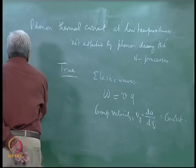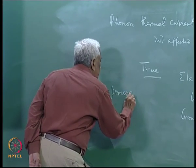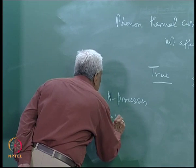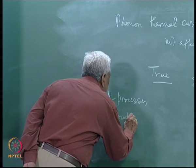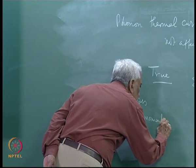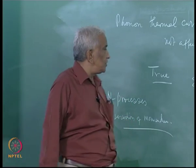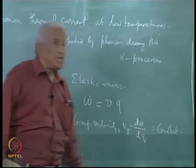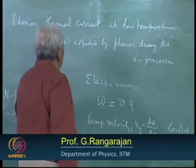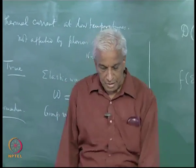N-processes are ones in which momentum is conserved. It is only the U-processes in which momentum is not conserved. When the momentum is conserved, that is consistent with the group velocity being constant. Therefore, such N-processes do not affect the thermal current. So the statement is correct.